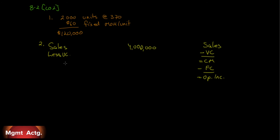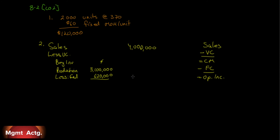Now we subtract all variable costs. Beginning inventory is zero, then we add production at 310 per unit — not 370, since we're using variable costing — giving production costs of 3,100,000. Less ending inventory of 2,000 units at 310, which is 620,000. Variable cost of production is 2,480,000. We also have variable selling and administrative expense of 160,000. So 4,000,000 minus 2,480,000 minus 160,000 gives a contribution margin of 1,360,000.